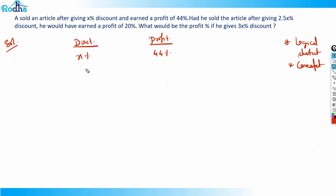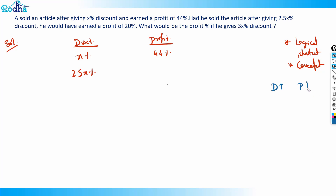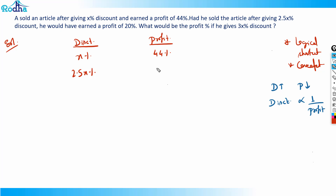Now had he sold after giving 2.5x percent discount, the profit is 20 percent. If a shopkeeper gives more discount, his profit will be less. So discount is always inversely proportional to the profit of the shopkeeper — more discount means less profit. In this case, discount is 2.5x percent and profit is 20 percent. What would be the profit if he gives 3x percent discount?